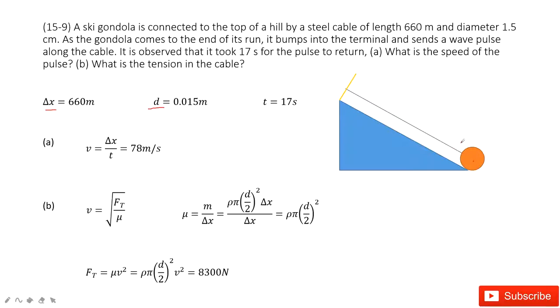So when this gondola punches there, the wave is generated and then sent back along this cable. And if we observed, it takes 17 seconds for this pulse to return to this point. So the time taken for the wave is 17 seconds.